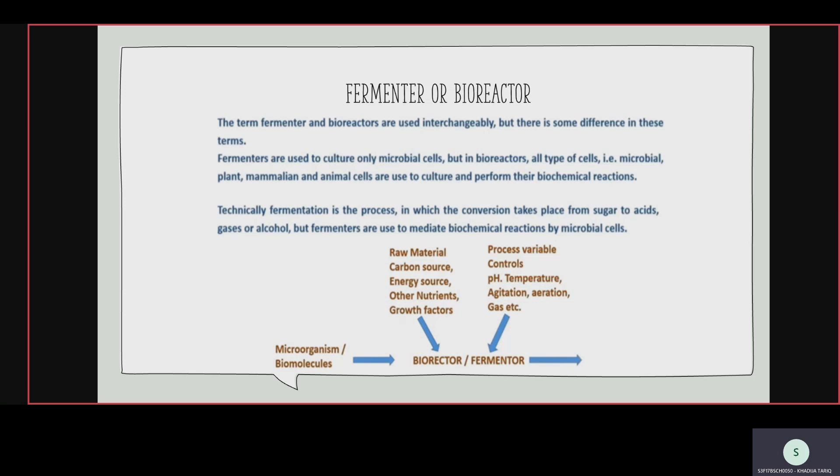Fermenters are used to mediate biochemical reactions by microbial cells. Microorganisms or biomolecules are added into the bioreactor along with raw materials — carbon source, energy source, other nutrients, and growth factors. Process variable controls include pH control, temperature control, agitation control, and aeration control. Gases are controlled, then products are formed, purified, stored, and packed.